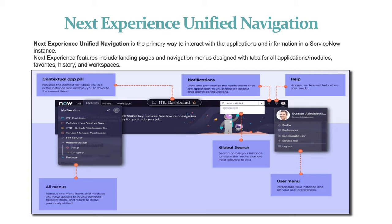Next Experience features include landing pages, navigation menus designed with tabs for all applications and modules, history, workspaces, favorites, and a user menu. As you can see on screen, this is the Next Experience Unified Navigation — that is the Neo UI.